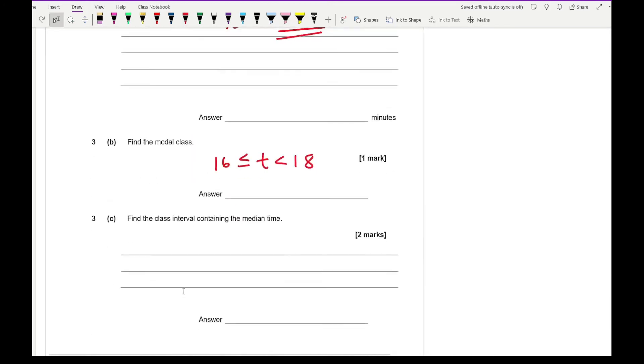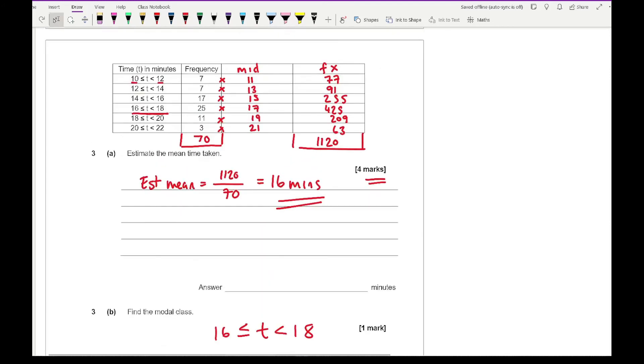Moving on to the next one, it says find the class interval containing the median. The median is the middle number. Now we know that we've got 70 bits of data, so the median position is going to be 70 divided by 2 which is 35. So I'm looking for the 35th occasion when he walked home. Then looking at the frequency, I'm trying to see which total would come up to 35. So here I've got 7, 14, so we'll just do a running total. That's then going to be 31, and then that's going to be 56.